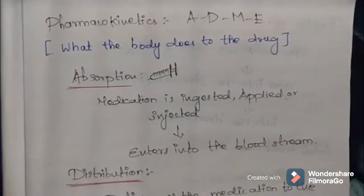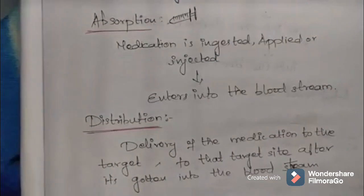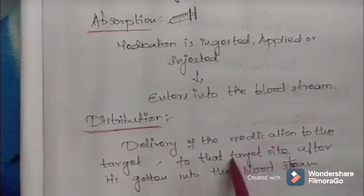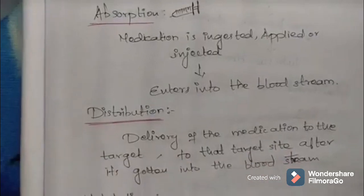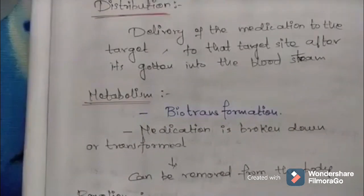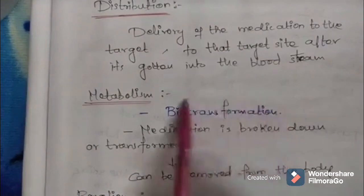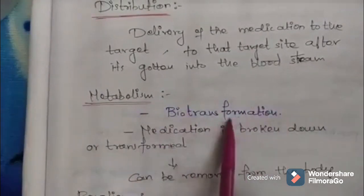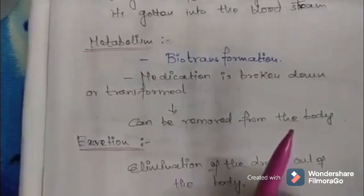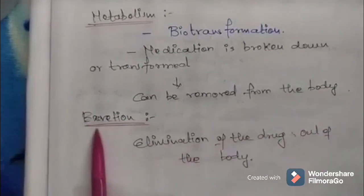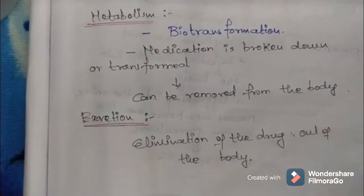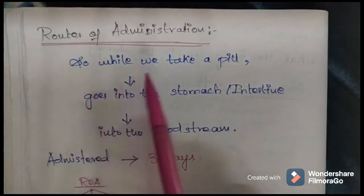The second phase is distribution — the delivery of the medication to the target site after it has entered the bloodstream. After distribution, the drug has to be eliminated from the body. For elimination, the drug must be broken down and transformed, a process called biotransformation. The medication is broken down so it can be removed from the body. The final stage is excretion, which is the elimination of the drug out of the body, carried out by the kidneys.